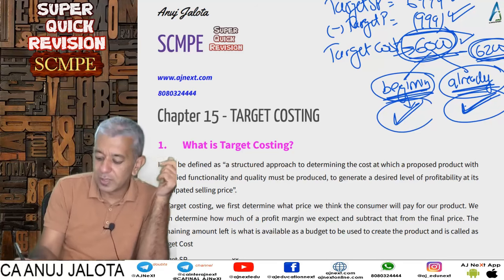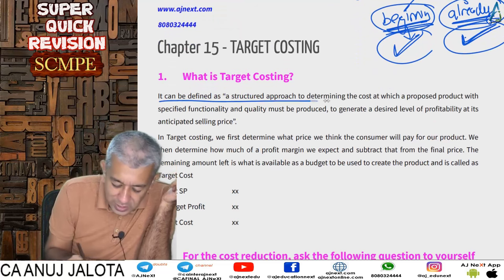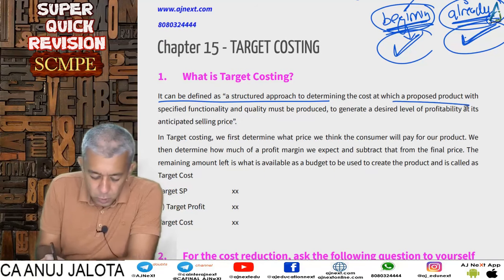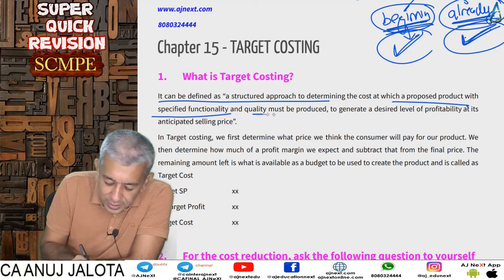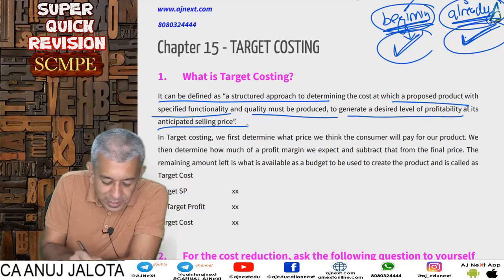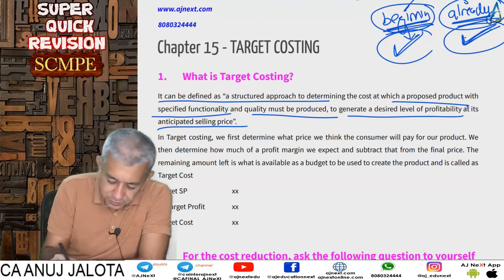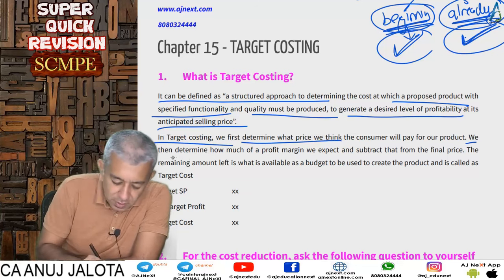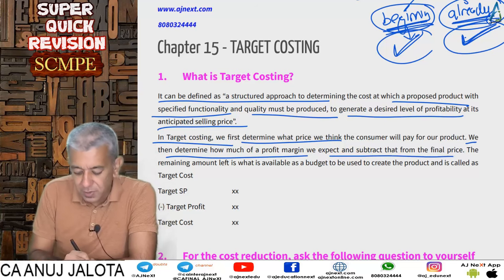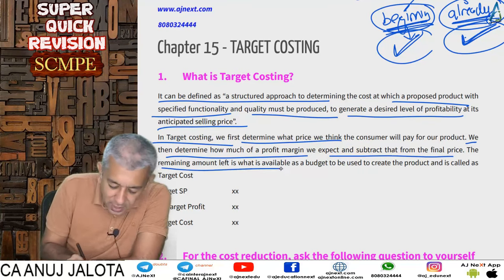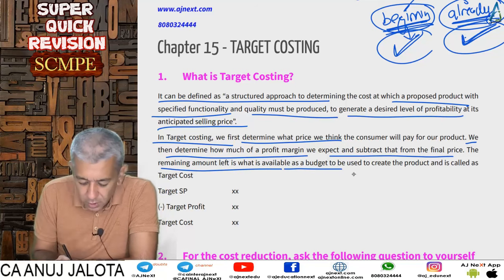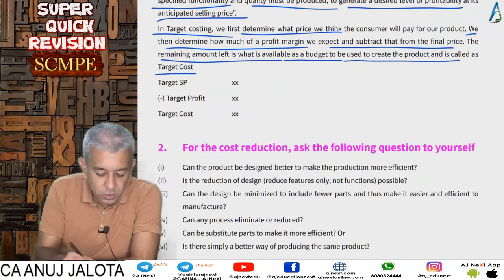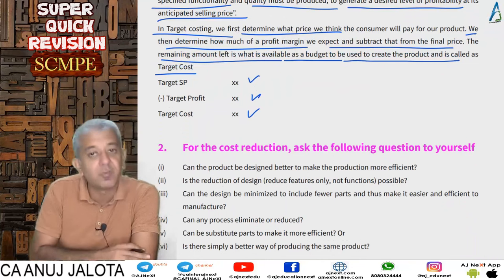Target costing can be defined as a structured approach to determining the cost at which a proposed product with specified functionality and quality must be produced to generate the desired level of profitability at the anticipated selling price. We first determine the price the customer will pay, then determine our profit margin, subtract that, and the remaining amount is available as a budget to create the product—that is the target cost. Formula: Target Selling Price minus Target Profit equals Target Cost.